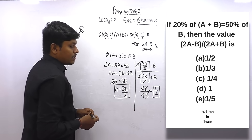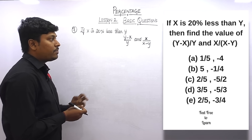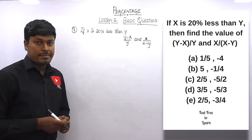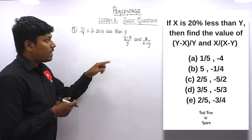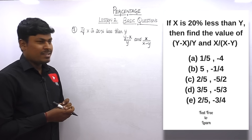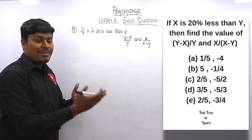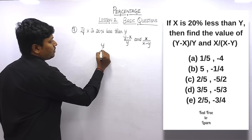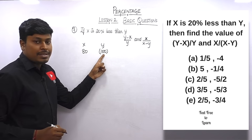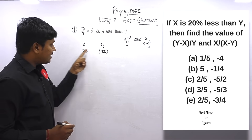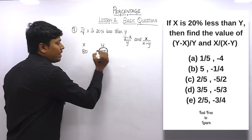Question number seven: if x is 20% less than y, find (y − x)/y and x/(x − y). We can solve this logically. Let y = 100; then x = 80 (since x is 20% less than y).